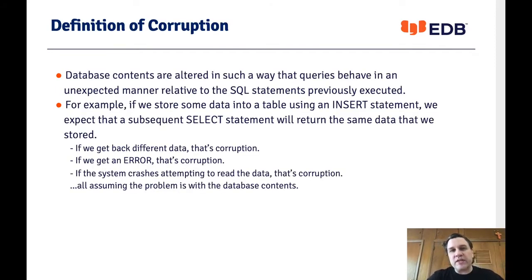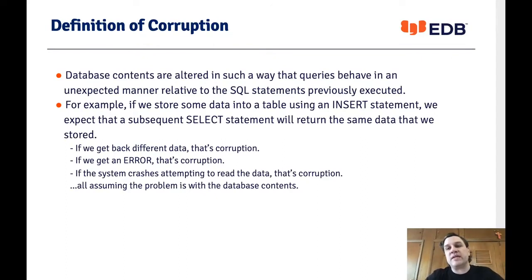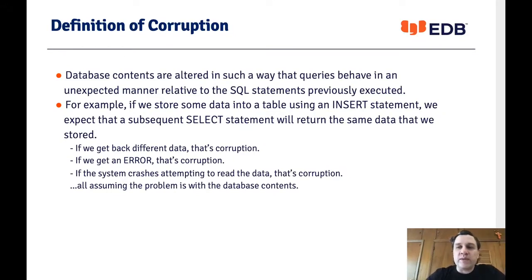Database corruption is when the database contents are altered in such a way that queries behave in an unexpected manner relative to the SQL statements previously executed. For example, if we insert data into a table and don't modify or delete it, we expect to retrieve the same data we stored. If we get back different data, that's database corruption. If we get an error, that's corruption. If the system crashes when trying to read the data, that's also corruption.